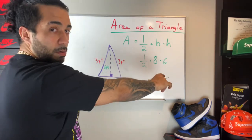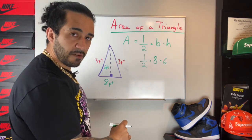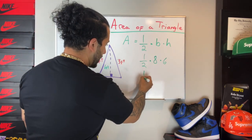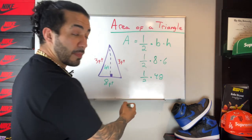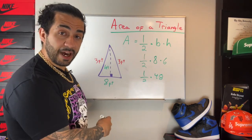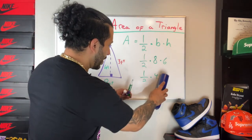Now eight times six is 48. One half times 48. Remember, multiplying by one half is the same as dividing by two.